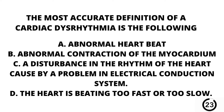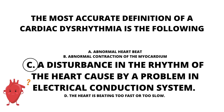Question number 20. The most accurate definition of a cardiac dysrhythmia is the following: A. Abnormal heartbeat. B. Abnormal contraction of the myocardium. C. A disturbance in the rhythm of the heart caused by a problem in the electrical conduction system. Or D. The heart is beating too fast or too slow. Our answer here is C. A disturbance in the rhythm of the heart caused by a problem in the electrical conduction system.